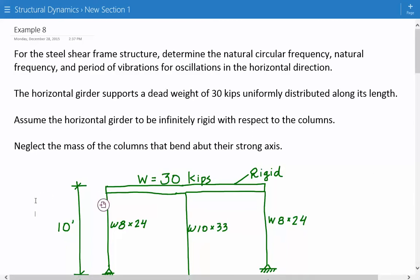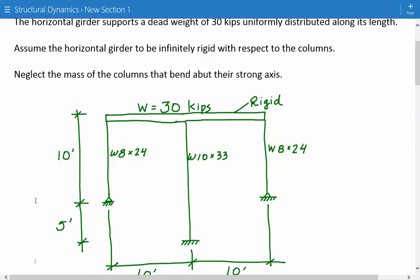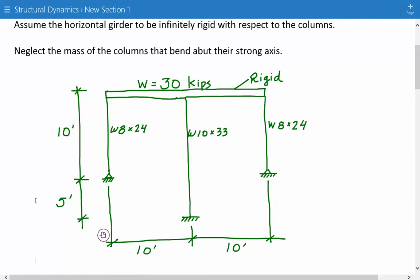So here's our structure. We have three columns. The outer columns are W8 by 24, and they have a length of 10 feet. And the middle column is W10 by 33, and it has a length of 10 plus 5, 15 feet.